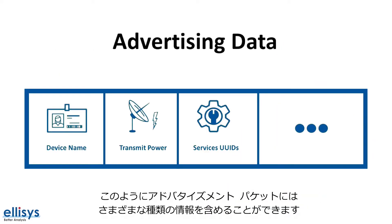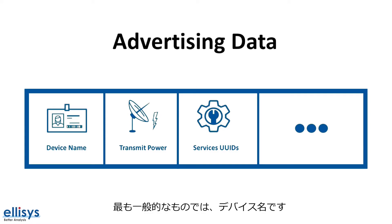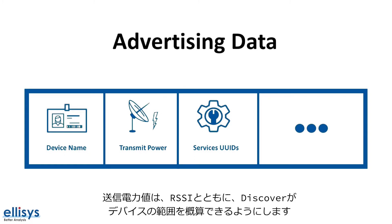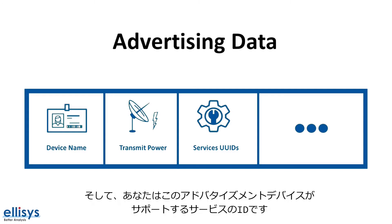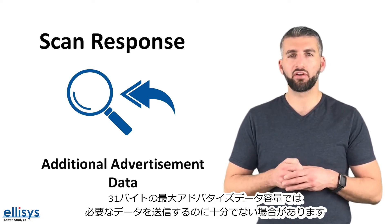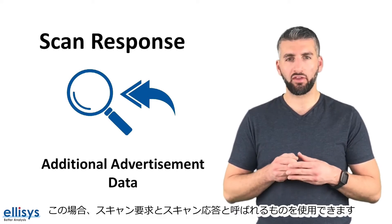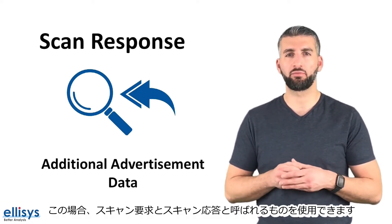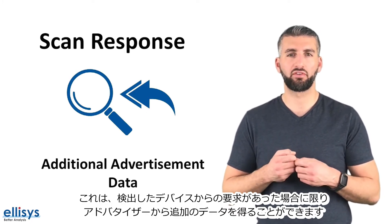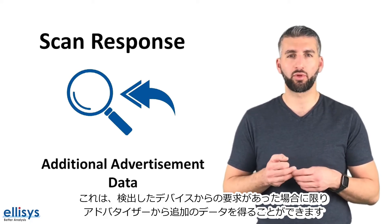An advertising packet can contain many types of information, but most commonly it'll include a device name, which makes it more user-friendly during discovery; the transmit power value, which along with the RSSI will allow the discoverer to approximate the range of the device; and UIDs for the services that the advertising device supports. Sometimes the 31 bytes of maximum advertisement data capacity is not enough. In this case we can use a scan request scan response — think of it as additional advertisement data that can be sent out by the advertising device, but only on request from the device doing the discovery.